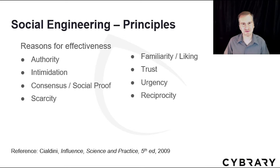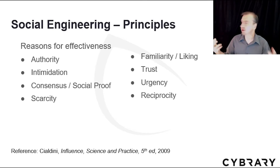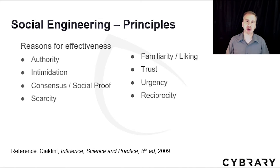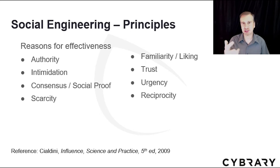Why is social engineering so effective? Dr. Robert Cialdini wrote a book about it — Reference Influence: The Art and Science of Persuasion. He lists the reasons for effectiveness as: authority, like a police officer or someone in a suit; intimidation, using power; consensus or social proof, while everyone else is doing it; scarcity, there's only three tickets left, better buy now; familiarity and liking, you like people who are like you; trust, establishing and then taking advantage of trust; urgency, better act now; and reciprocity — if I give you something, you feel like you need to give something back in return. These are all base reasons why social engineering is so effective. Be on the lookout for these in your environment.